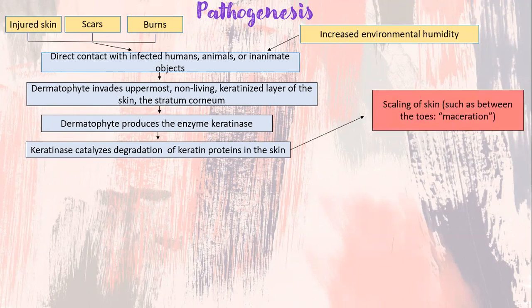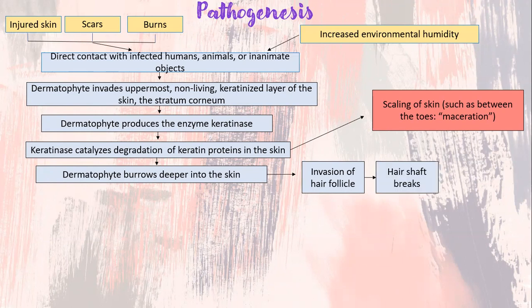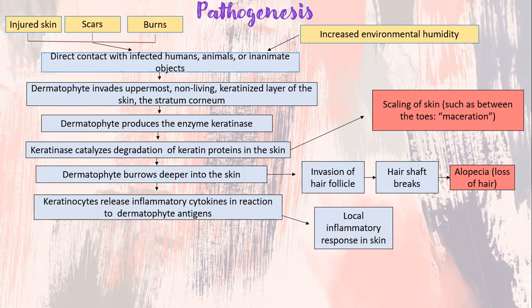This results in scaling of the skin, such as in between the toes, also known as maceration. A dermatophyte then burrows deeper into the skin and invades the hair follicle, causing breaking of the hair shafts, leading to alopecia or loss of hair. Then, the keratinocytes release inflammatory cytokines in reaction to the dermatophyte antigens.